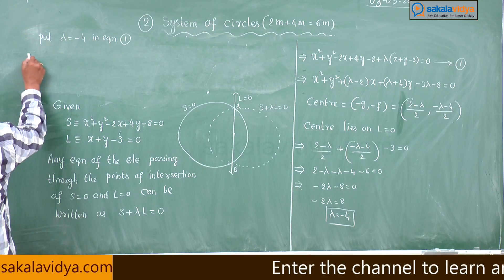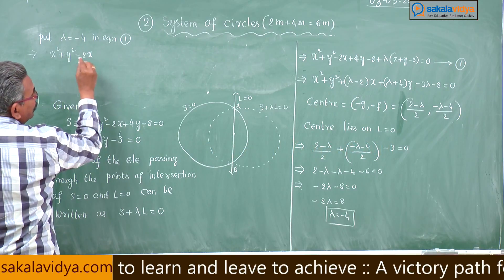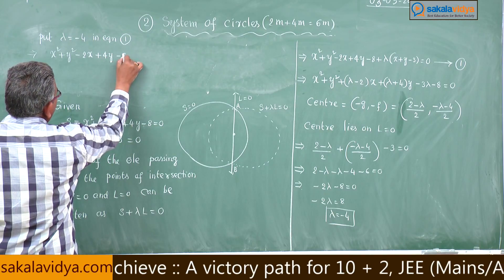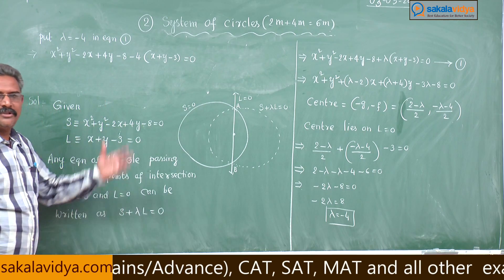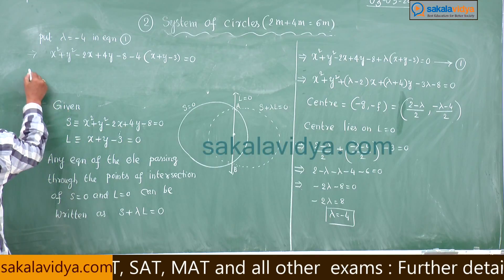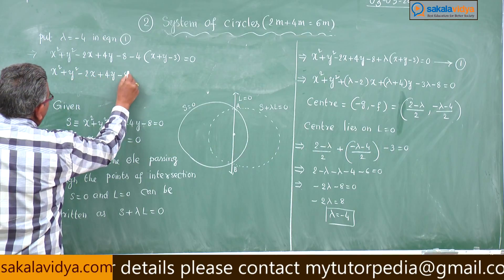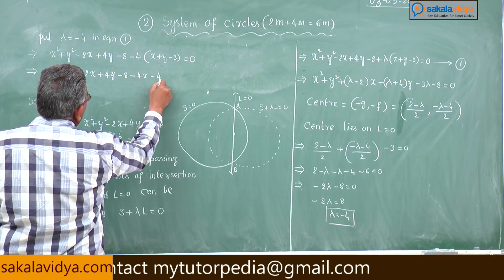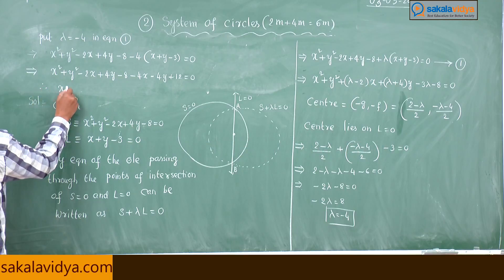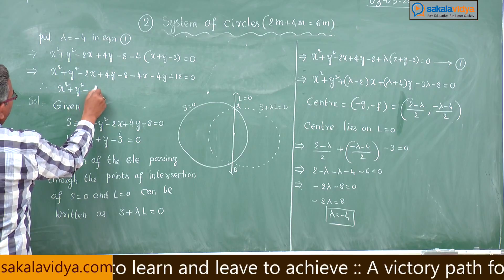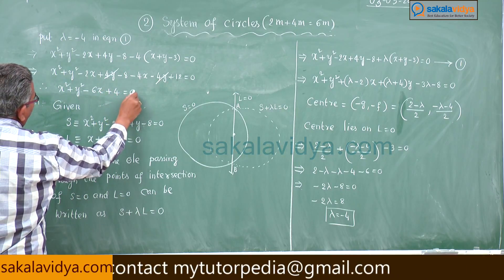Put lambda equals minus 4 into equation 1: x squared plus y squared minus 2x plus 4y minus 8 minus 4 times (x plus y minus 3) equals 0. Expanding: x squared plus y squared minus 2x plus 4y minus 8 minus 4x minus 4y plus 12 equals 0. Therefore: x squared plus y squared minus 6x plus 4 equals 0. This is the answer.